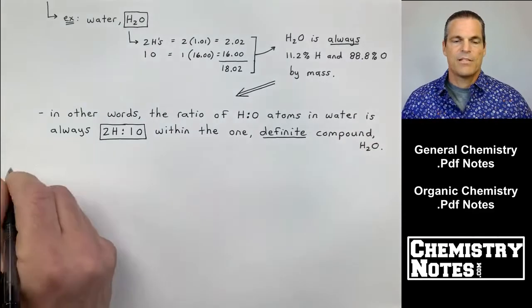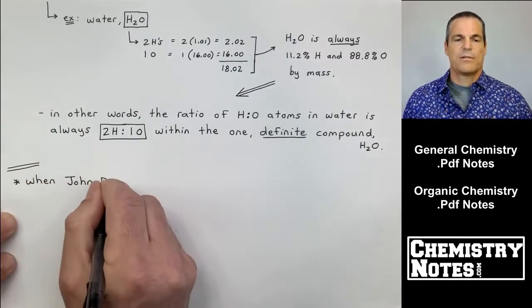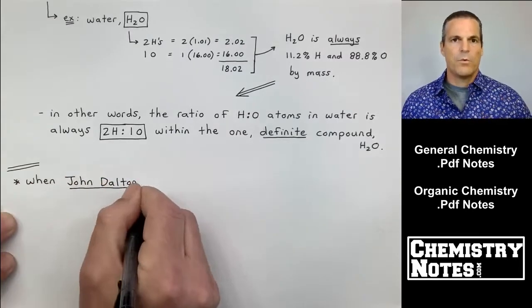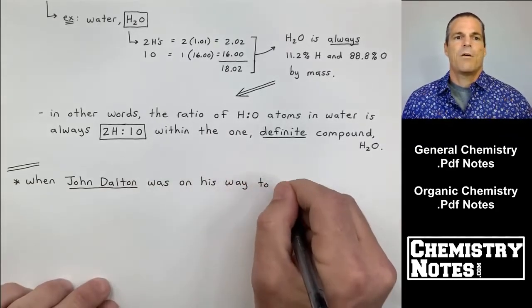So the ratio is always 2H to one oxygen in that one definite compound, H2O. See how I use the word there? There's one compound, one definite compound. So that'll be helpful when we get to the third law, law of multiple proportions.